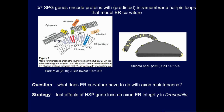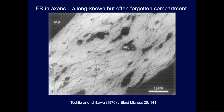Our main question has been: what does ER curvature have to do with axon maintenance? The strategy has been to make or use Drosophila mutants in these genes and ask what is the effect on the integrity of ER in axons. Nearly every meeting I go to, someone asks me whether there is ER in axons, but if you look in the right way, it's easy to find. This is an electron micrograph from 1976 showing quite a large mammalian axon full of smooth ER tubular network.